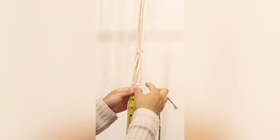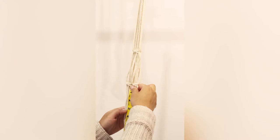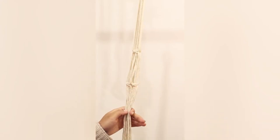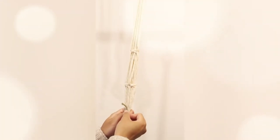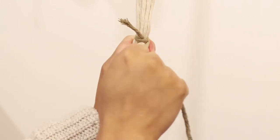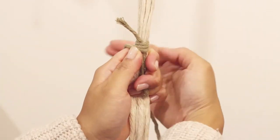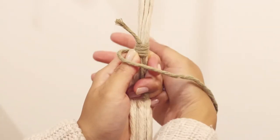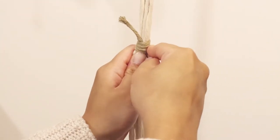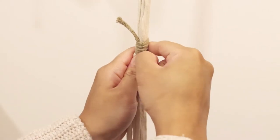Now from the last square knot that we made, we need three inches of space and we're gonna make a gathering knot. Now I'm gonna wrap around this string eight times, making sure that I pull my strings tightly because this will support your plant pot.